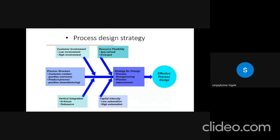Process design strategy. Customer contact position. Services. Product processes positioning. Manufacturing. Customer involvement. Low involvement or high involvement. Vertical integration. In-house or outsource. Strategies of change. Process re-engineering. Process improvements. In that, capital intensity. Low automation or high automation. Resource flexibilities. Specialized and enlarged. Effective product design.